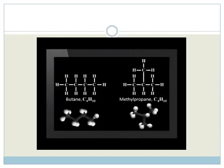Here is another example of two isomers, butane and methylpropane. Can you see that the molecular formula is the same, but the structural arrangement of the atoms is different?